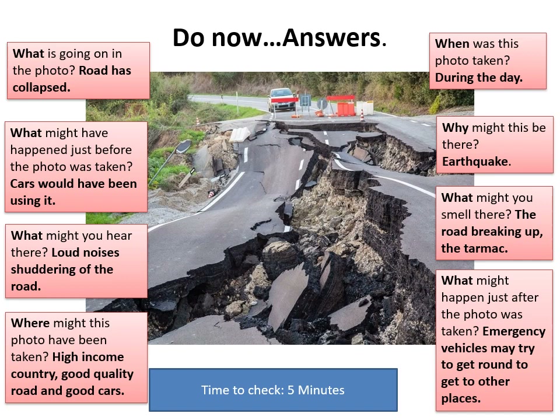When was this photo taken? Well, definitely during the day. Why might this be there? Well, it could be an earthquake — in fact, it is an earthquake. There are other ideas: you could have put something about a landslide, or that the ground has become very wet and has lost its ability to hold itself together, so it's just kind of collapsed.